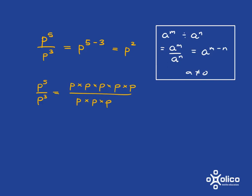If we simply write out what the exponents mean, we can see where the rule originates from. P to the 5 is just 5 p's multiplied together. P cubed is just 3 p's multiplied together. Now you can see that these 3 p's at the bottom are going to take out 3 of the p's from the top.